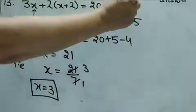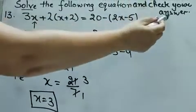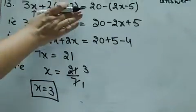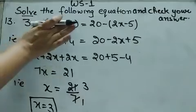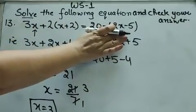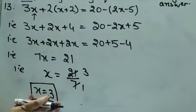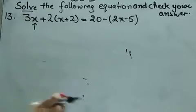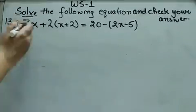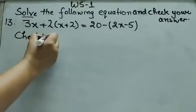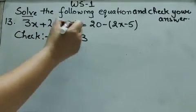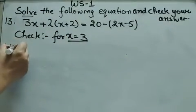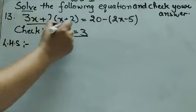Now we have to check the answer. मुझे x = 3 की value के लिए given equation की left hand side और right hand side check करनी है। अगर equal मिल जाती है, it means यह हमारा solution correct है। Check part: for the given value x = 3, I start from left hand side, that is LHS.